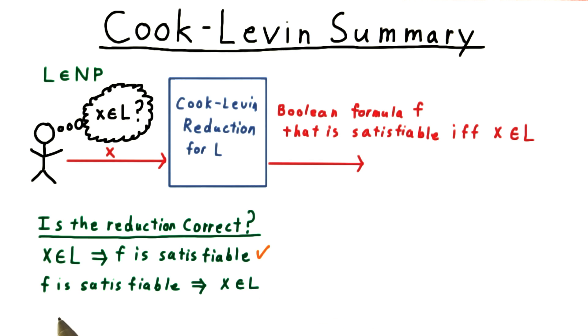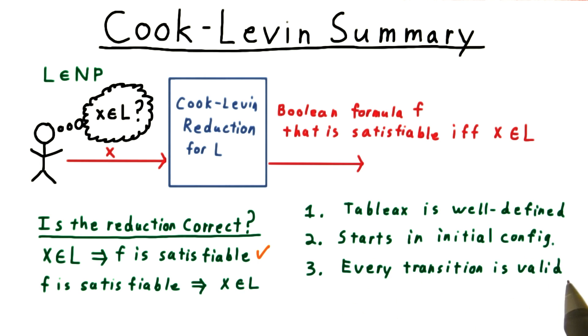How about the other direction? Does the formula being satisfiable imply that x is in the language? Take some satisfying assignment for f. As we've argued, the corresponding tableau is well defined. Only one of the state variables can be true at any time. The tableau also starts in the initial configuration. Every transition is valid, and the configuration sequence ends in an accepting state. That's all that's needed for a non-deterministic Turing machine to accept. So yes, this direction is true as well.